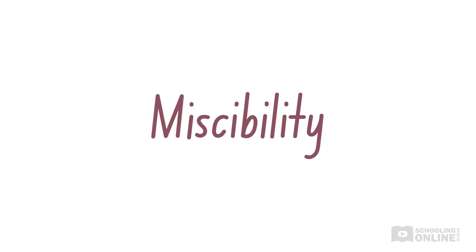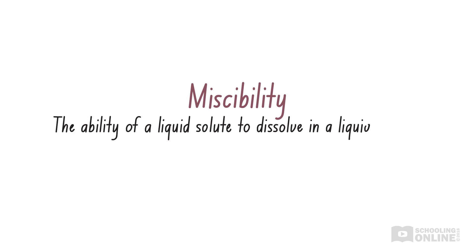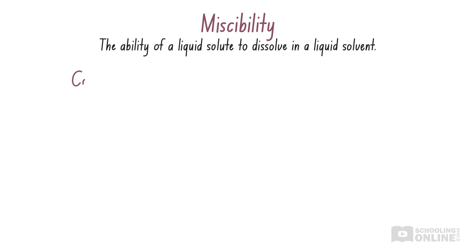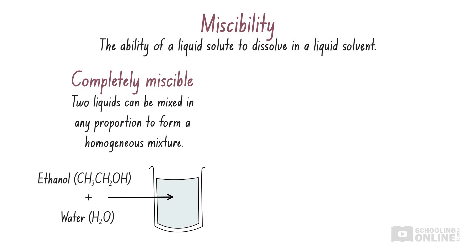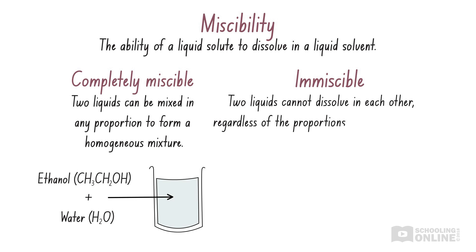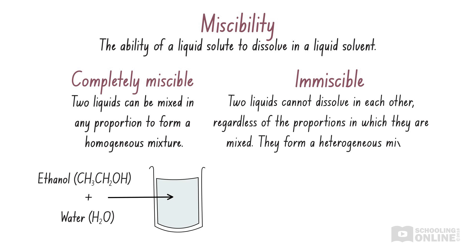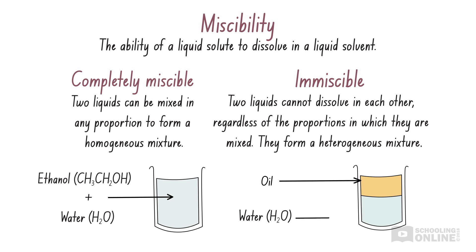Let's pause to look at the term miscibility. Miscibility refers to the ability of a liquid solute to dissolve in a liquid solvent. If two liquids are completely miscible, we can mix them in any proportion to form a homogeneous mixture. For example, ethanol and water are miscible because we can make solutions using any concentrations of ethanol and water. If two substances are immiscible, they cannot dissolve in each other regardless of the proportions in which we mix them. Instead, they remain in two distinct layers, forming a heterogeneous mixture — for example, oil and water do not mix.